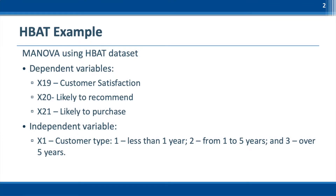We will use the beta dataset to demonstrate MANOVA. MANOVA can handle multiple metric dependent variables, and the independent variable is a categorical variable. In this example, we have three dependent variables: x19 customer satisfaction, x20 likely to recommend, and x21 likely to purchase. The independent variable is x1, customer type.